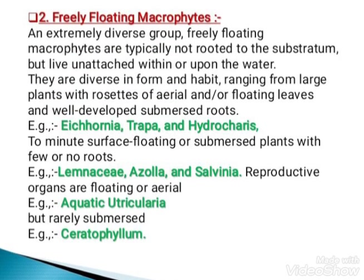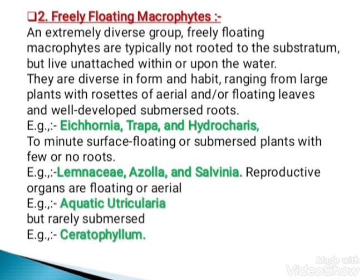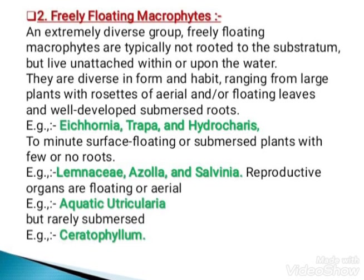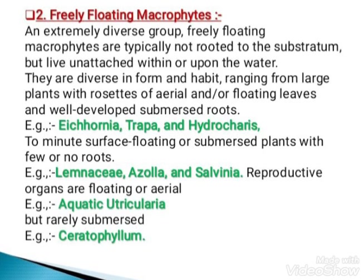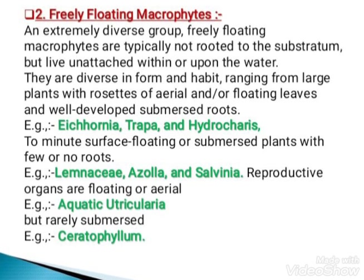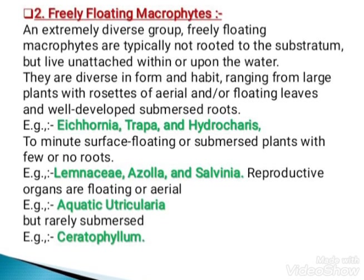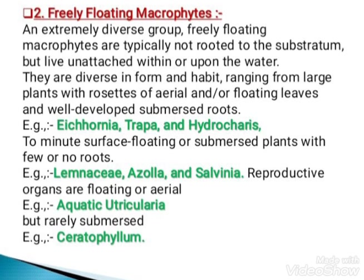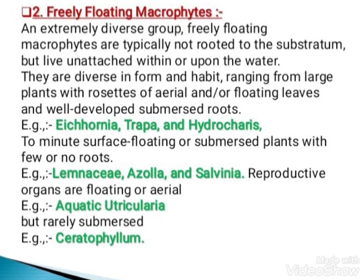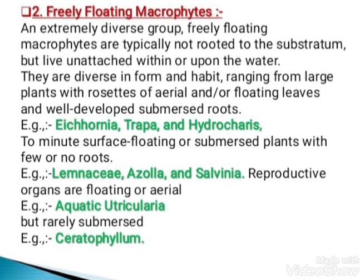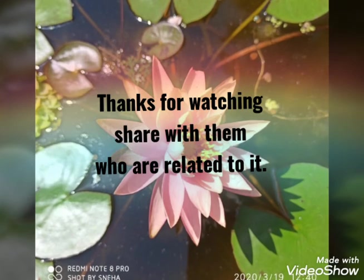Now, Type 2: freely floating macrophytes. An extremely diverse group, freely floating macrophytes are typically not rooted to the substratum but live unattached within or upon the water. They are diverse in form and habitat, ranging from large plants with rosettes of aerial and floating leaves and well-developed submerged roots — examples include Eichhornia, Trapa, and Hydrocharis — to minute surface-floating or submerged plants with few or no roots, such as Lemna, Azolla, and Salvinia. Reproductive organs are floating or aerial, but rarely submerged. That's all for the video, thank you.